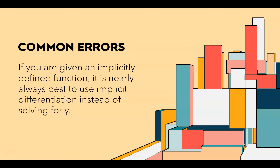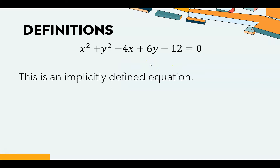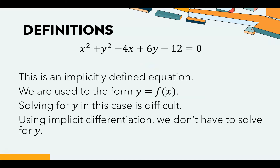If you're ever given an implicitly defined function, it's best not to use the normal way. Use implicit differentiation instead of solving for y. This is an implicitly defined function because it's not in our normal form — y equals a whole bunch of junk with x. Solving for y is difficult and creates an additional problem, but if we know implicit differentiation, we can find the formula for instantaneous rate of change without actually solving for y.